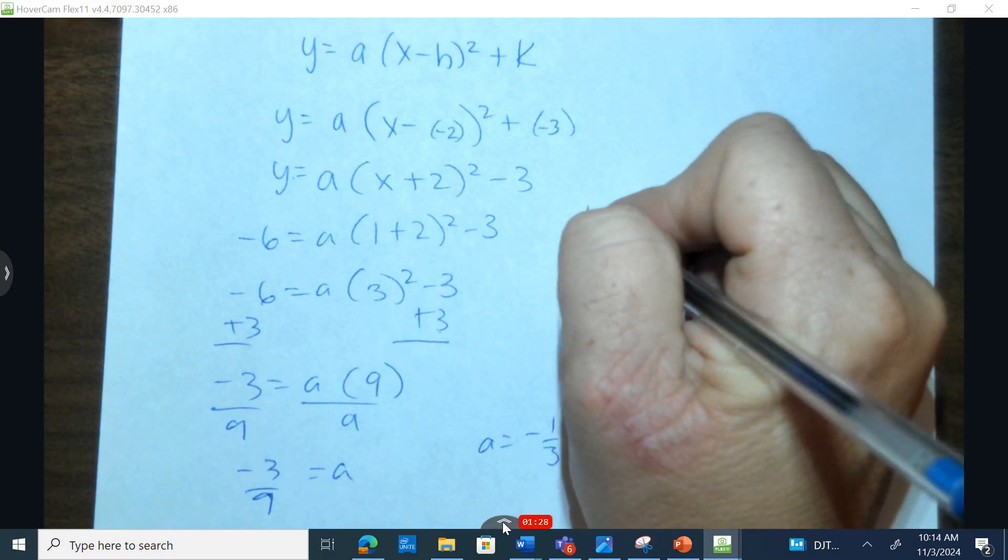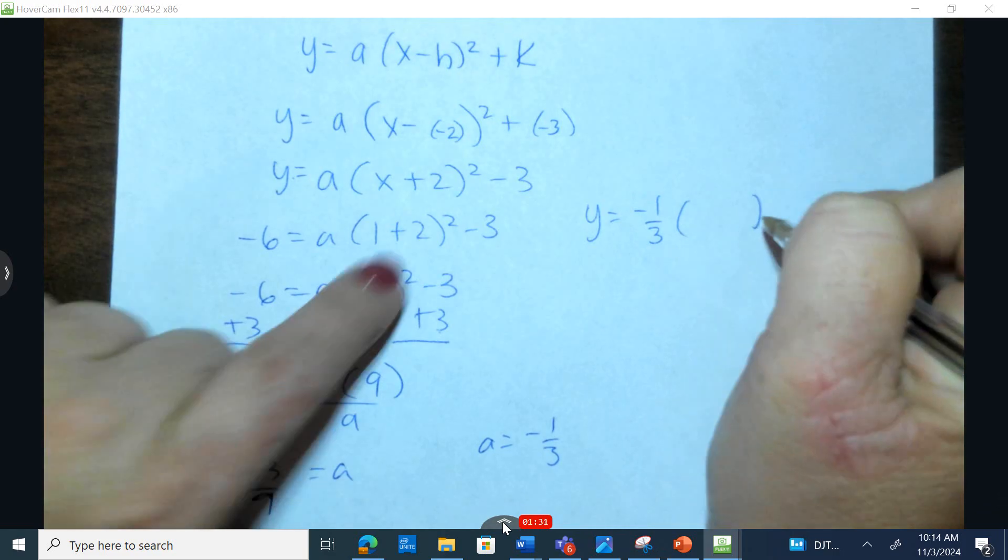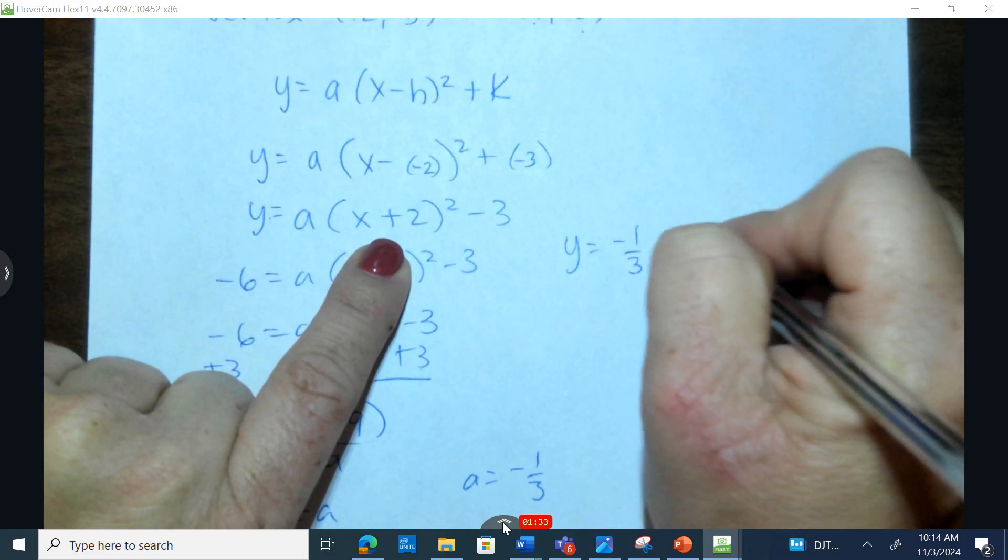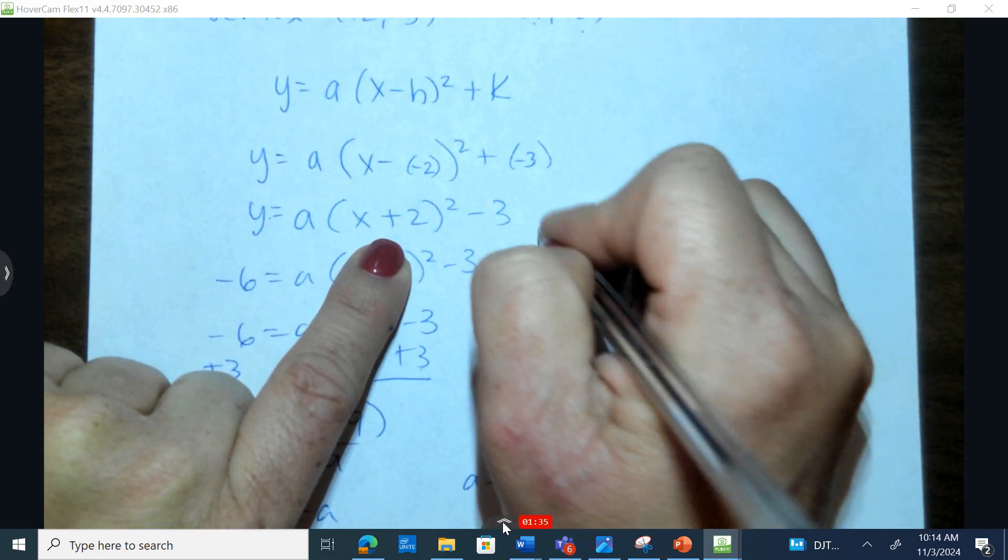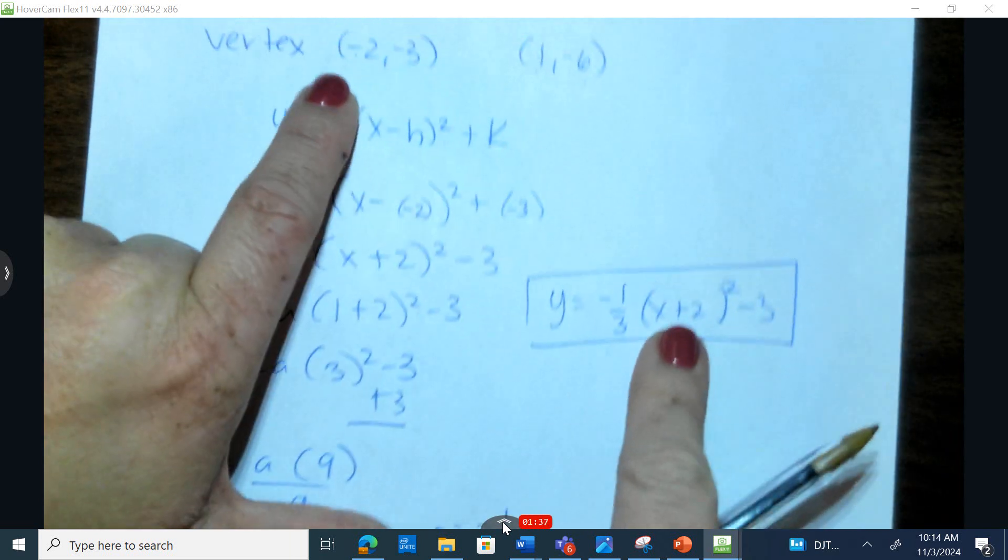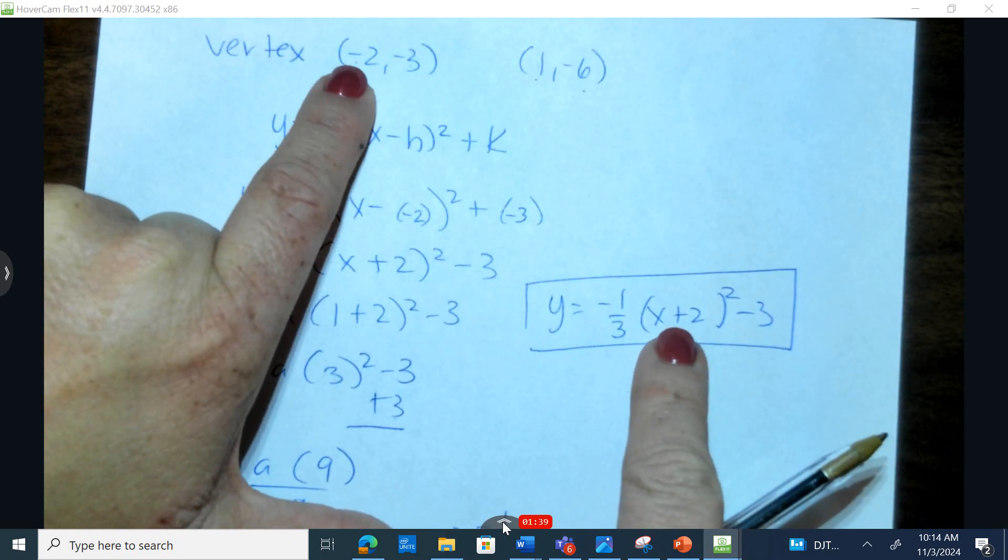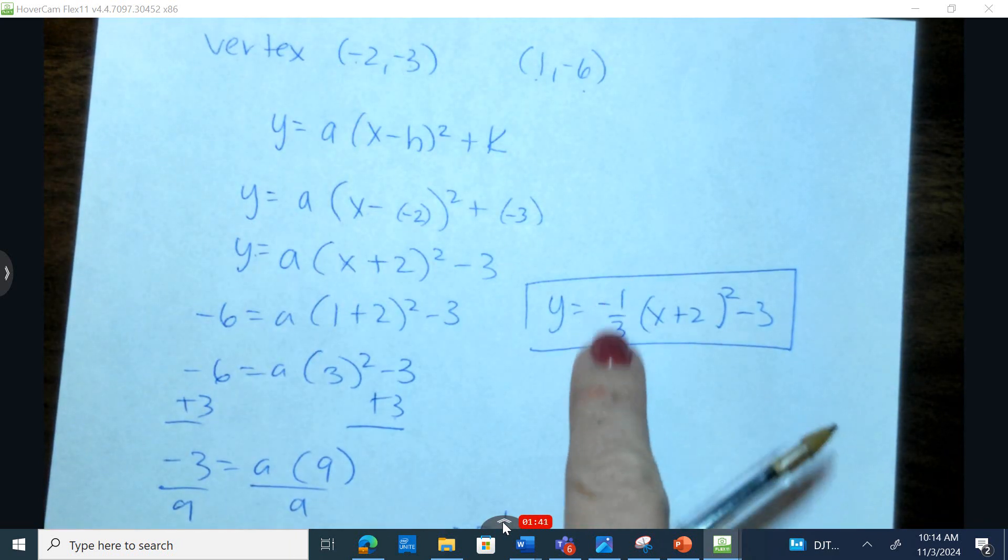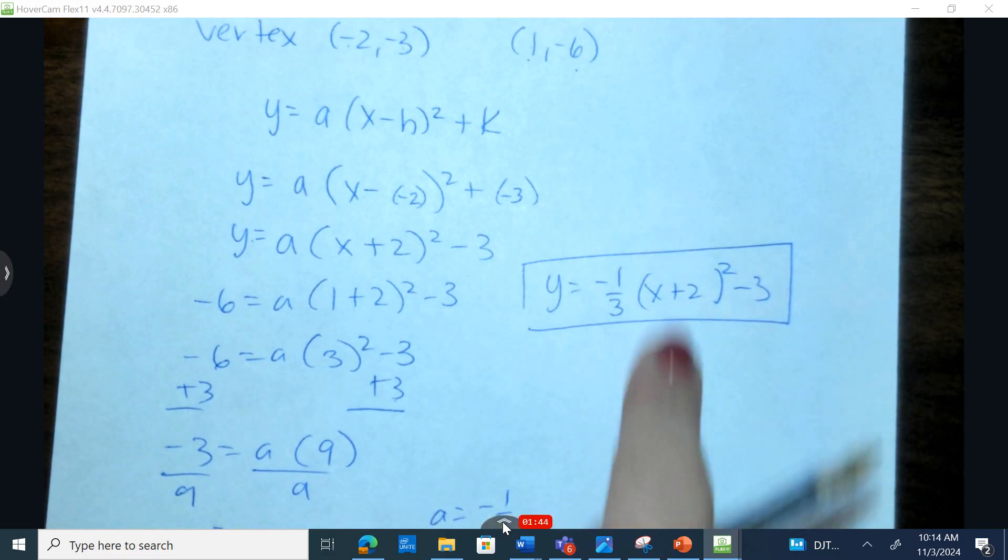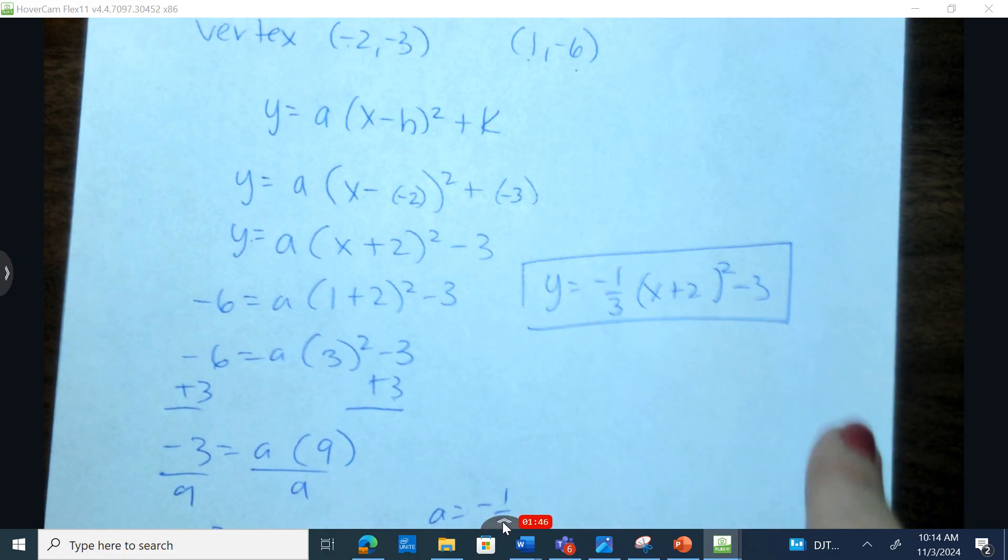Let's write this equation. y equals negative 1 third. I'm coming back up here and writing down what we had. This is the equation with the following vertex. We were able to achieve the a. It tells me that this problem is going to open up downward, and it's going to be wider.